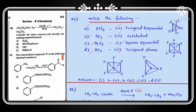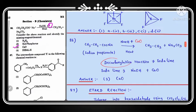Question number 86: sodium propionate (CH₃CH₂COONa) reacts with a mixture of sodium hydroxide and another substance to give ethane and sodium carbonate. This reaction is decarboxylation — removal of the CO₂ group. For decarboxylation we use soda lime, which is a mixture of sodium hydroxide and calcium oxide. The missing substance is calcium oxide; option 3 is the correct answer.